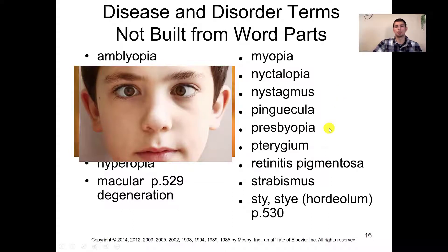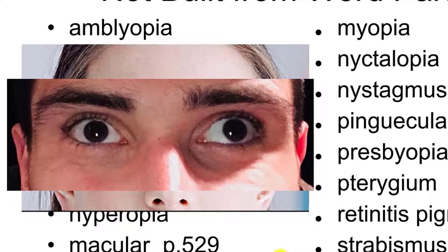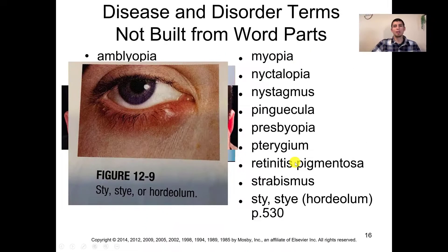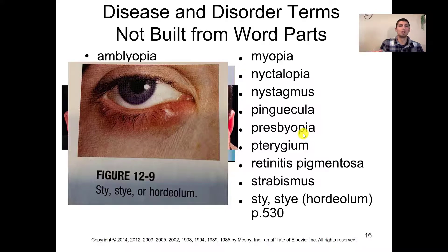Strabismus is the medical term for being cross-eyed. Here we can see that the patient's right eye is normal and focused forward, but their left eye is crossed — facing inward or medial. Here's another image where it's not quite as bad, and then a pretty severe case in the opposite direction; all of these would be strabismus. A stye is pretty common — it's that inflamed red part of your eyelid caused by an infection of an oil gland, usually from contact after getting something on your hands and rubbing your eyes.